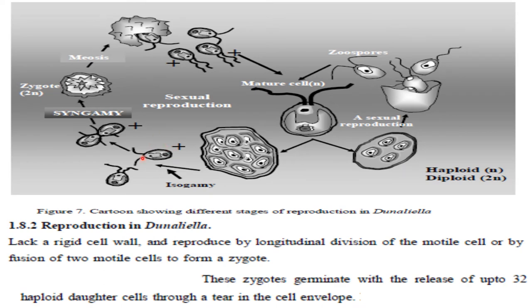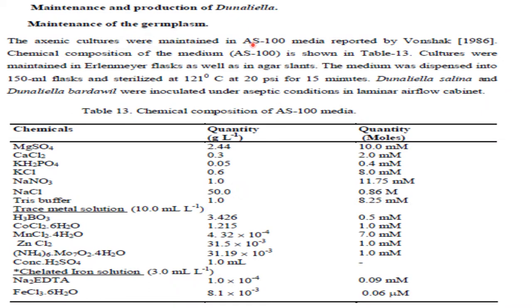Dunaliella does not usually have a rigid cell wall. They reproduce vegetatively by longitudinal division of the motile cell, or by fusion of two motile cells to form a zygote through syngamy, which is sexual reproduction. This zygote germinates with the release of up to 32 haploid daughter cells after meiosis by tearing up the cell envelope. Either these cells produce a mature cell or enter asexual reproduction through spore formation. Dunaliella bardawil is a halo-tolerant alga and is grown in AS100 medium.